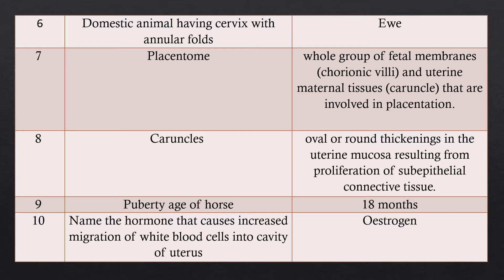Question 9: What is the puberty age of the horse? Answer: The puberty age of the horse is 18 months. Question 10: Name the hormone that causes increased migration of white blood cells into the cavity of the uterus. Answer: Estrogen hormone. Estrogen hormone has many functions with regard to the uterus.